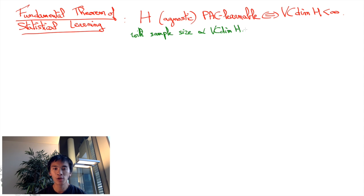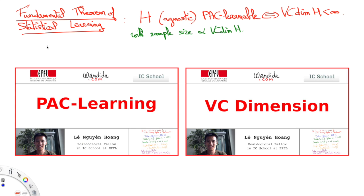If you don't know what PAC-learnability or VC dimension are, please check out the previous videos I made on these topics. Very roughly, a hypothesis class H is PAC-learnable if it's very likely to learn a very good approximation of the real underlying prediction function using a polynomial-sized sample.